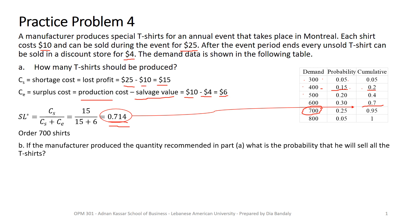Part B: if the manufacturer produces the recommended quantity of 700, what is the probability that he can sell all t-shirts? This is easier than the normal distribution case because we can see exactly what's happening with demand. If you make 700, you can sell all of them if demand is 700 or 800.